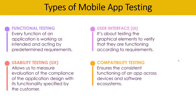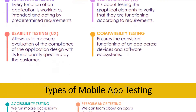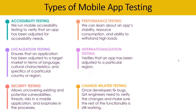After that, you need to perform compatibility testing. Your primary goal here should be to ensure the consistent functionality of an app across devices and the software ecosystem. Then you further need to perform accessibility testing, where your goal should be to verify that the application has been adjusted for accessibility needs.